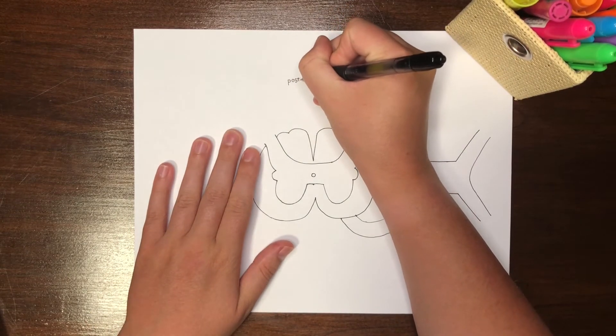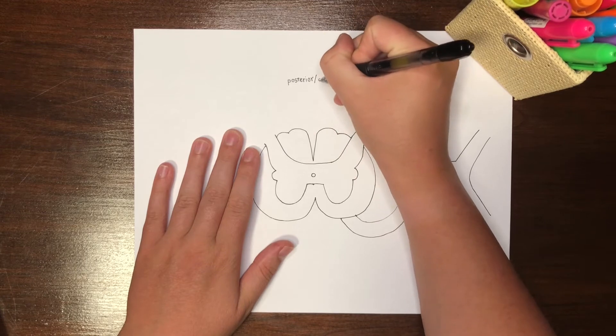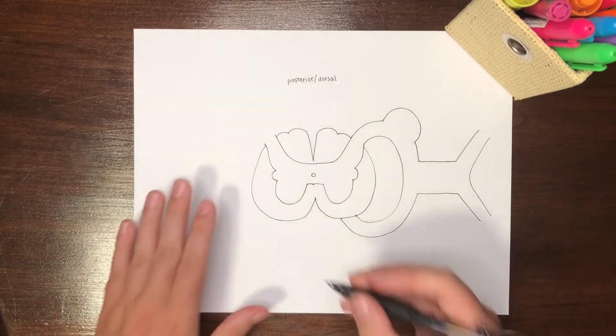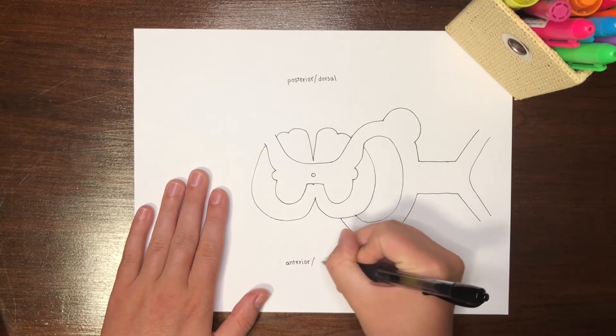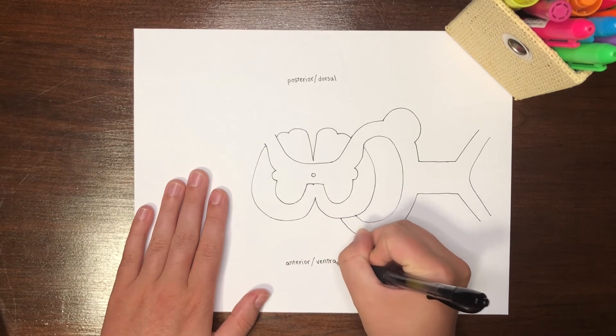The top of our spinal cord drawing is facing posteriorly, or dorsally. The bottom of our spinal cord drawing is facing anteriorly, or ventrally. This orientation helps us differentiate different structures.